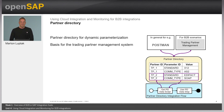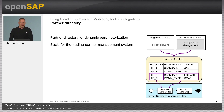The partner directory is an integrated part of integration suite and cloud integration. It enables the dynamic parametrization of integration flows, allowing one integration flow with dynamic processing based on invoked parameters related to a specific partner ID. The parameters can be created, updated, and deleted via REST-based APIs. You can use tools like Postman for testing purposes, and trading partner management consumes all the data pushed towards the partner directory.